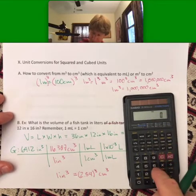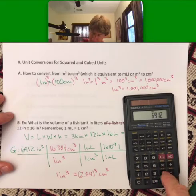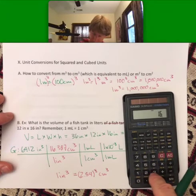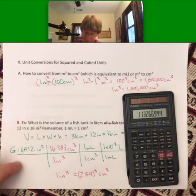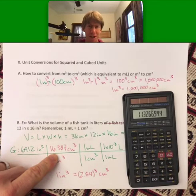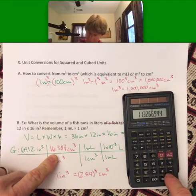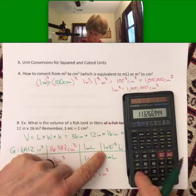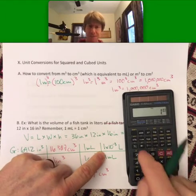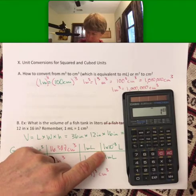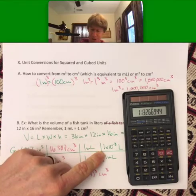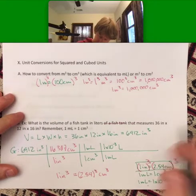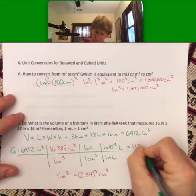6912 times 16.387, I'm going to hit my equals here. It seems like I entered that right I hope so. Then I'm going to hit times one exponent three minus, and I get that fish tank is 113 to three significant figures liters.